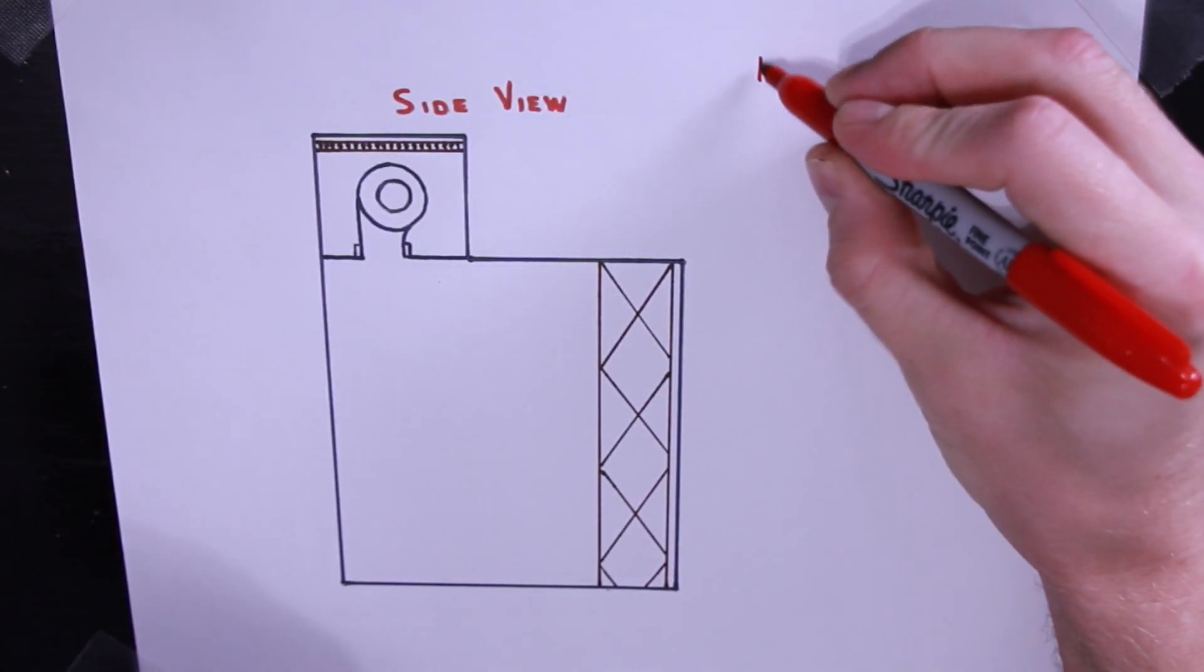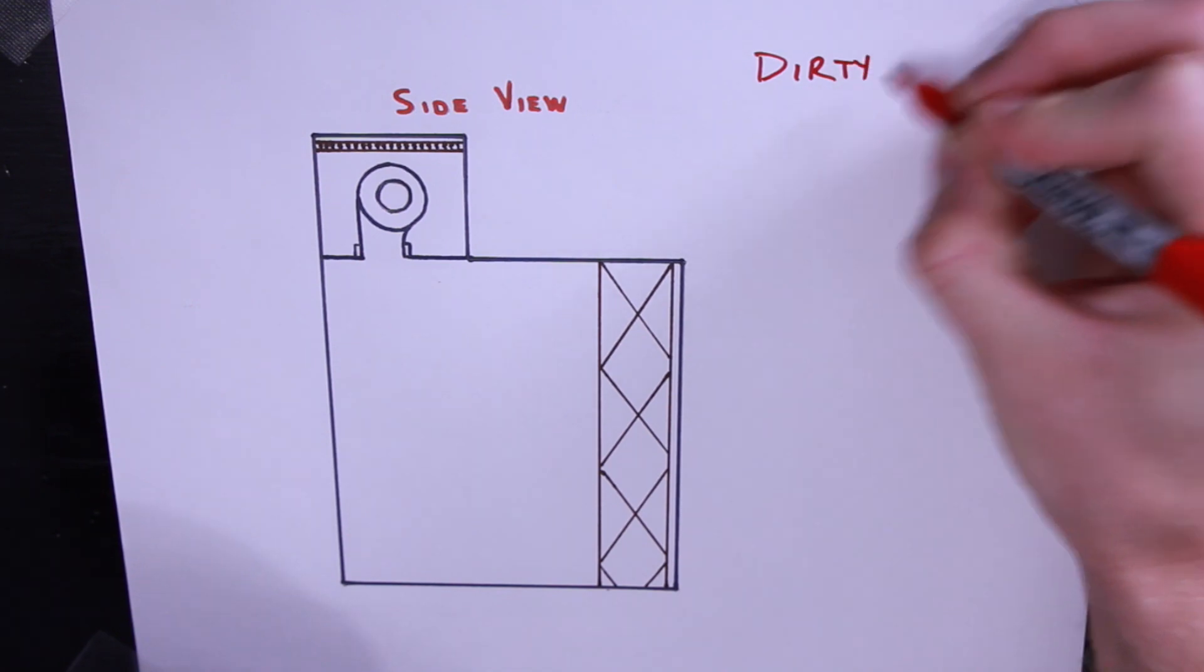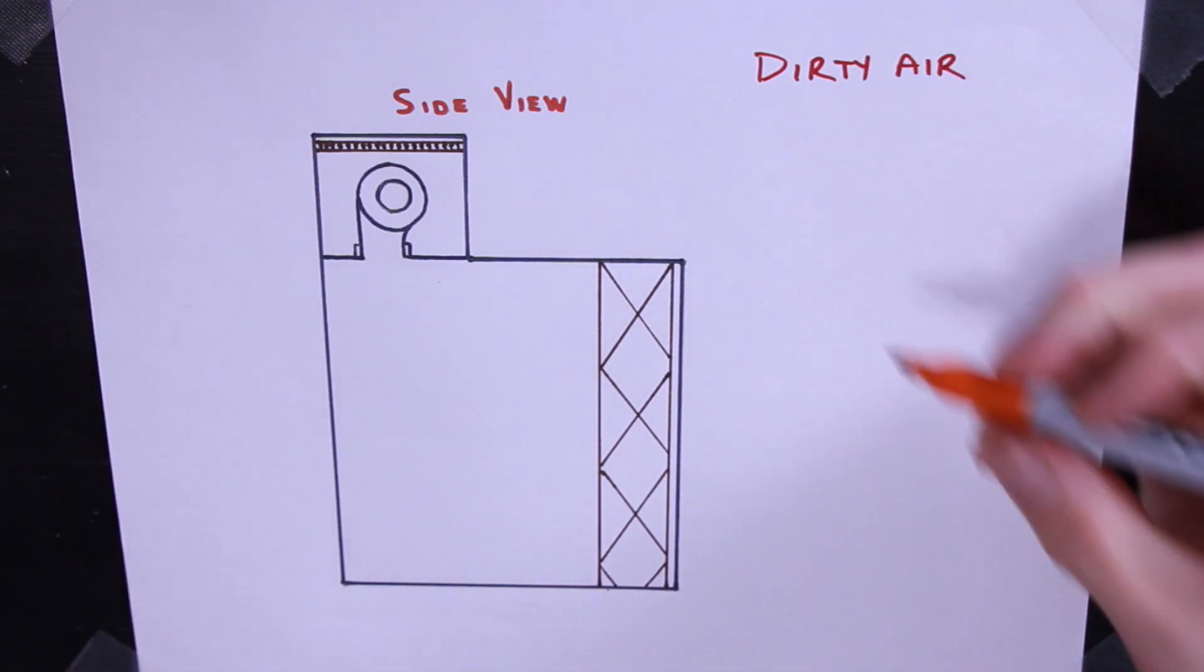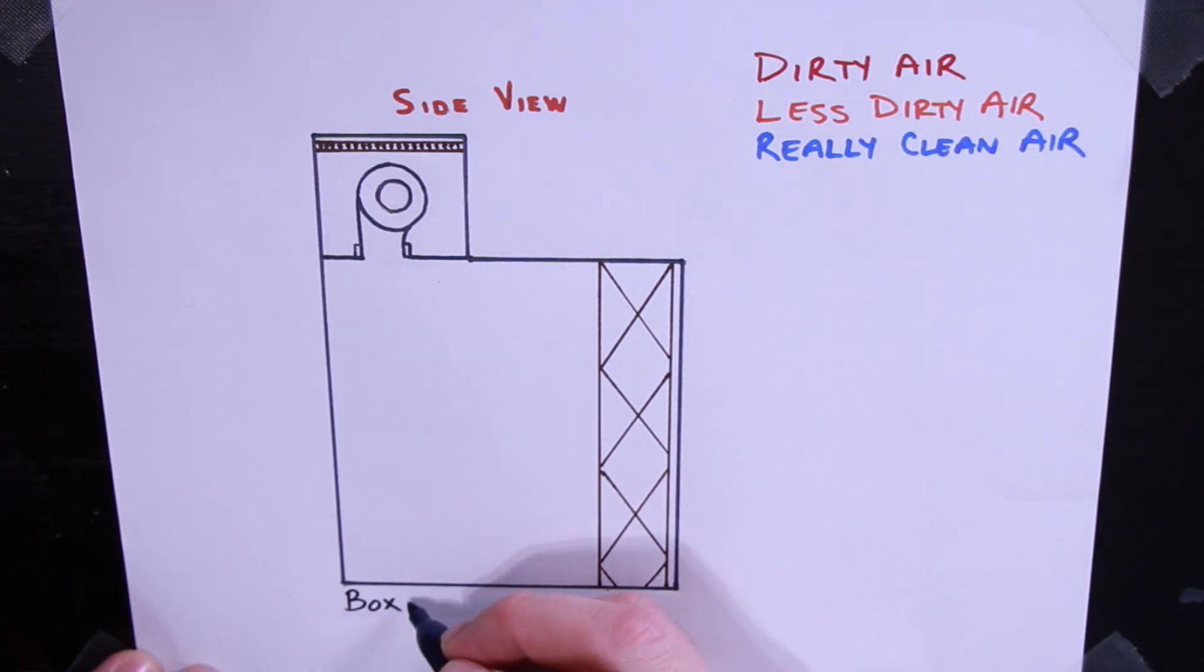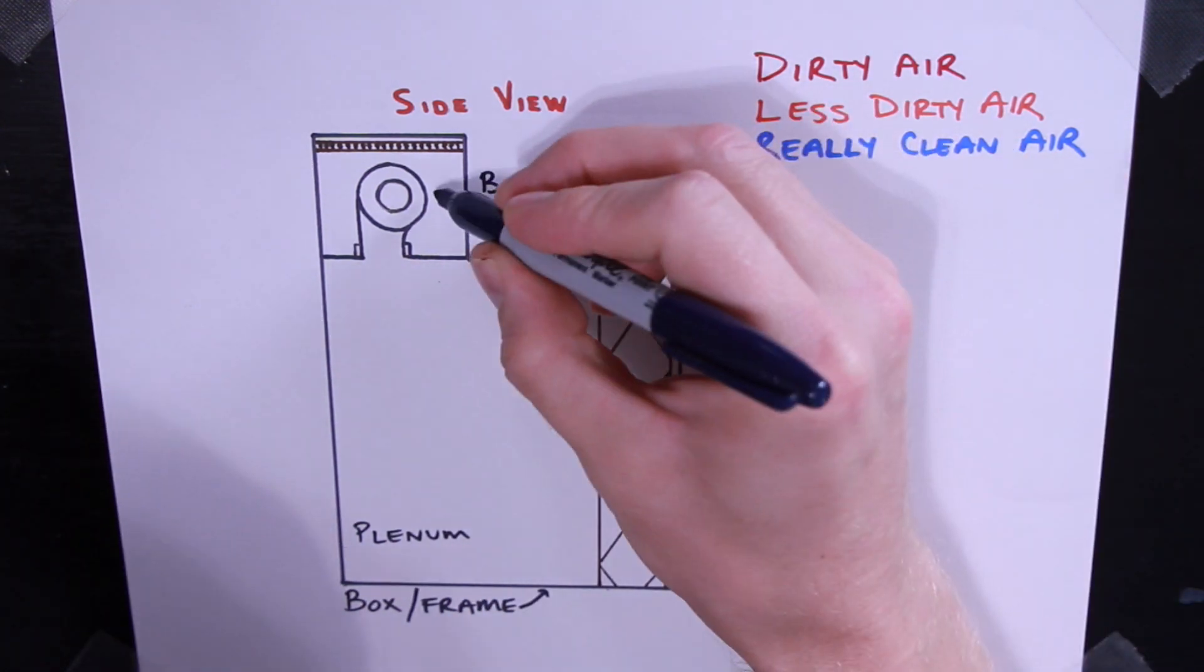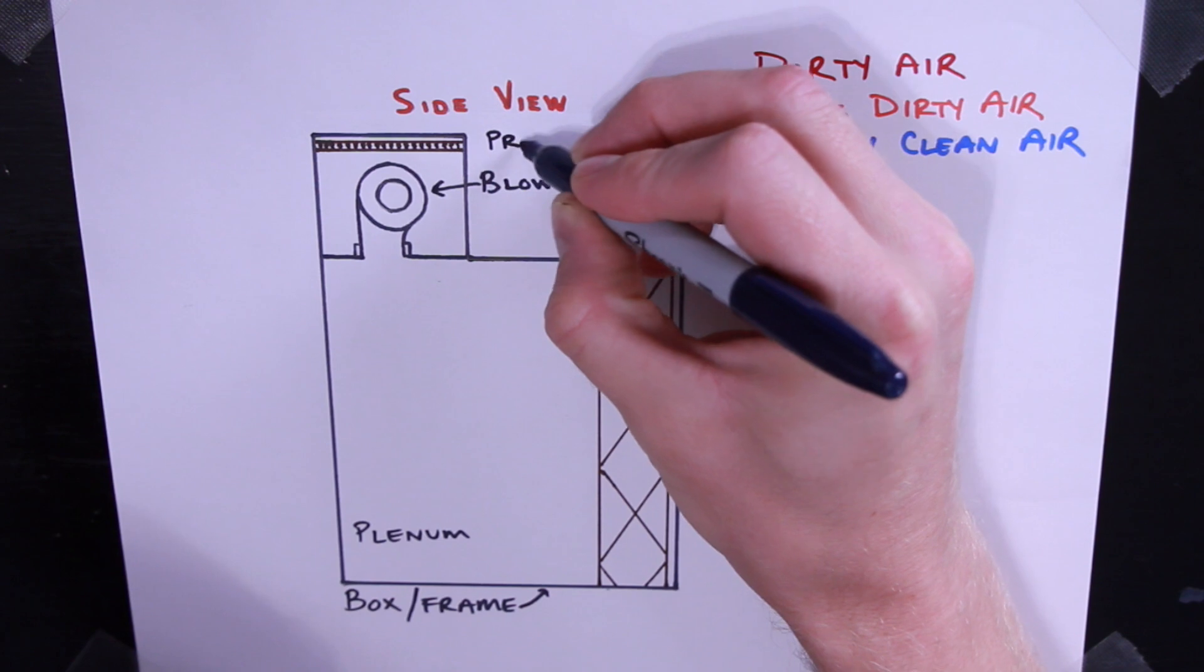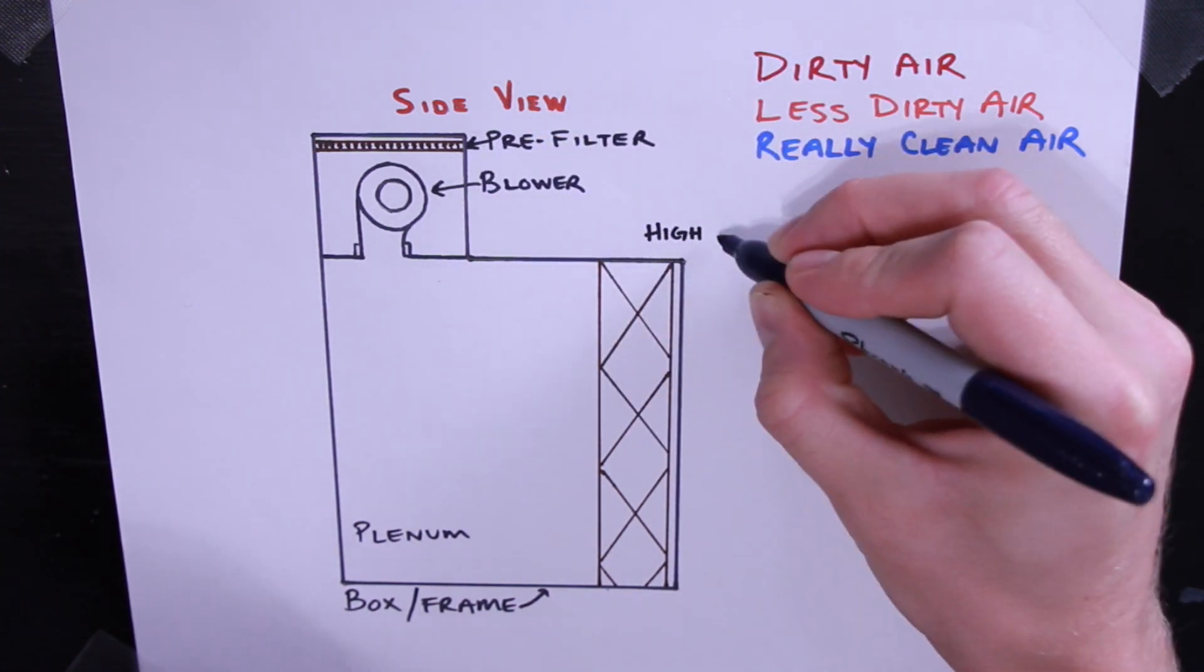In this illustration, we're going to use red to indicate dirty air, orange to indicate air that's a little bit less dirty, and blue to indicate really clean air. This is the layout of a typical laminar flow hood. We have a box or a frame, a plenum, a blower motor, a pre-filter to screen out any big dust particles, and a high-efficiency particulate air filter, also known as a HEPA filter.